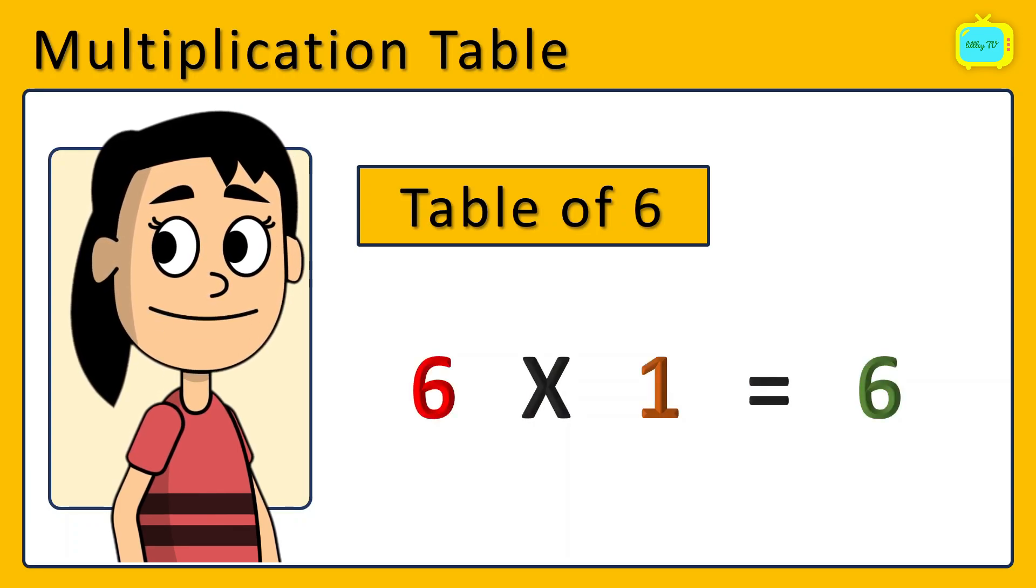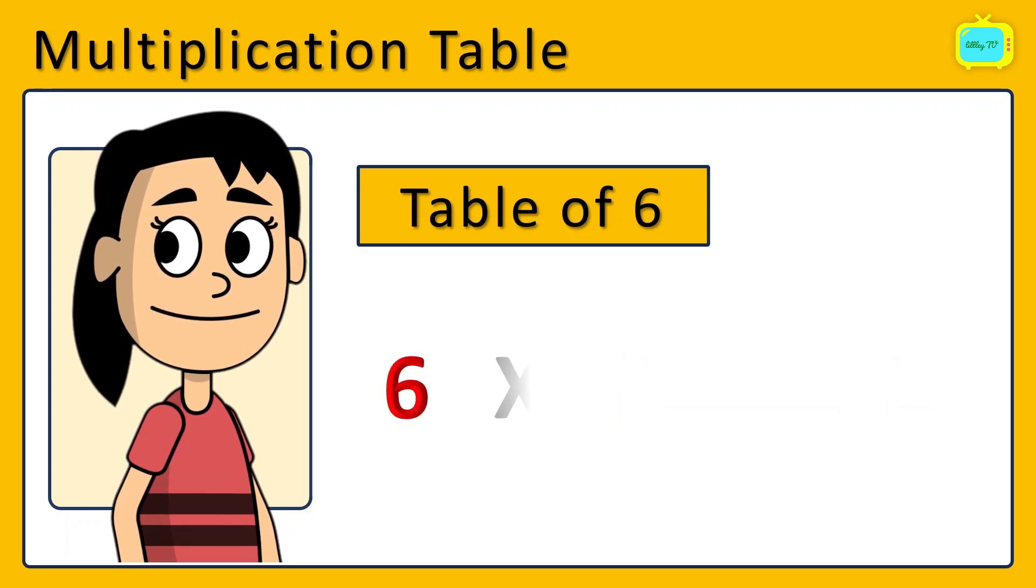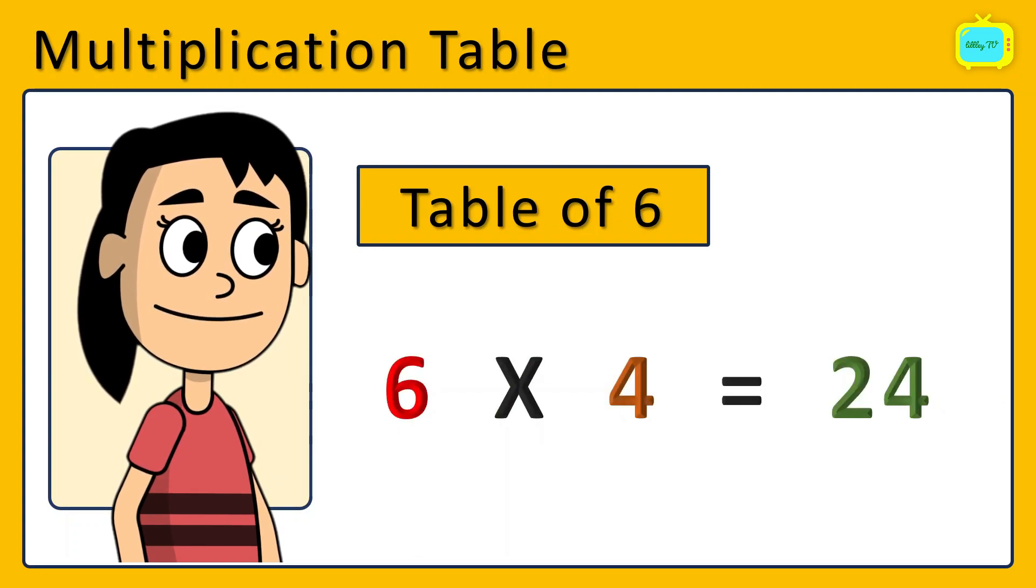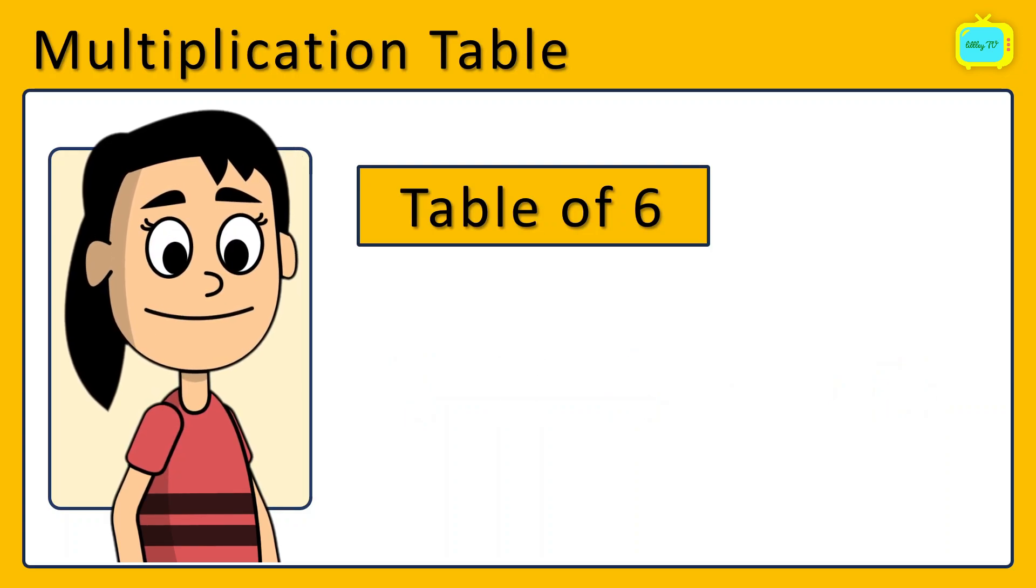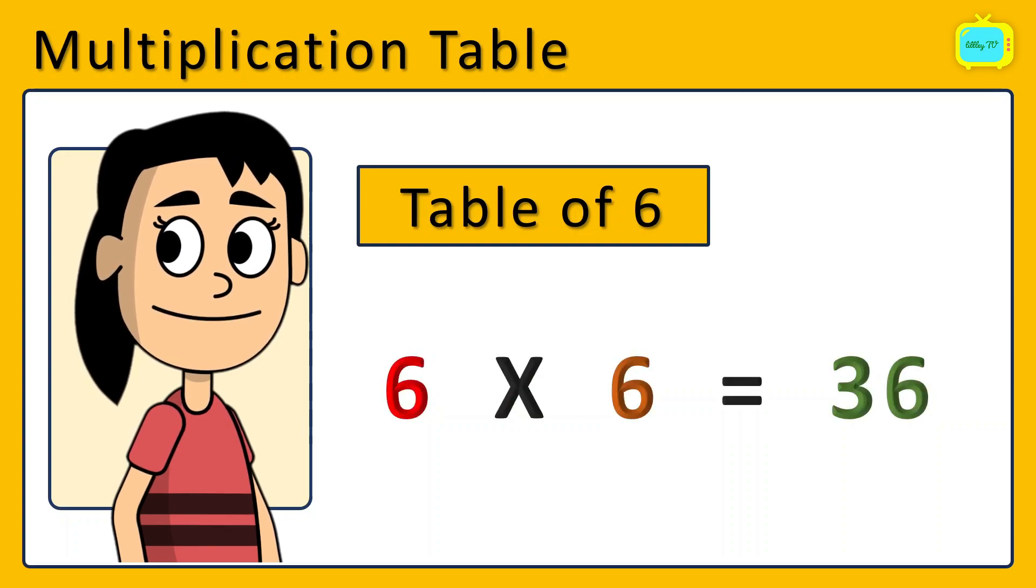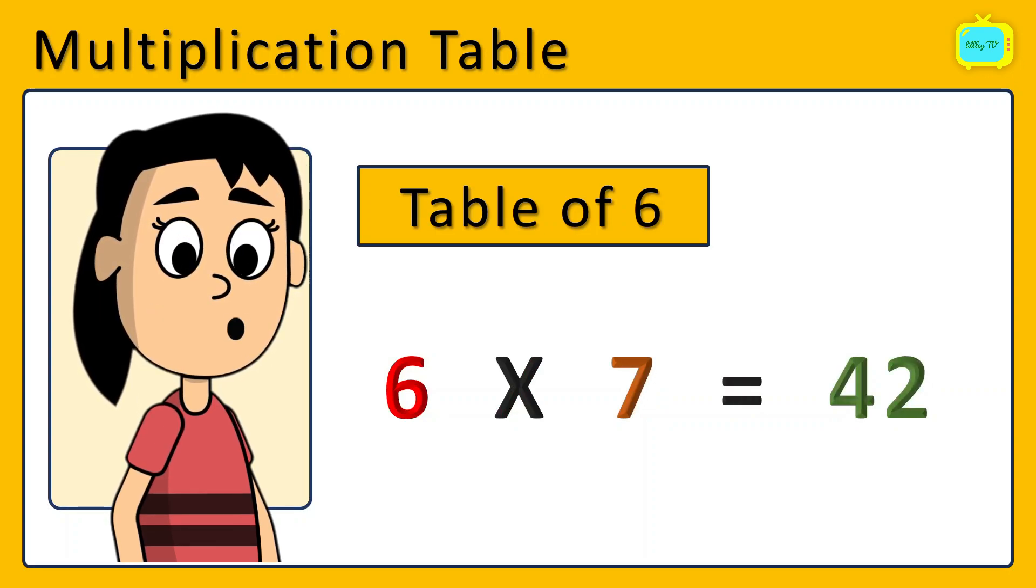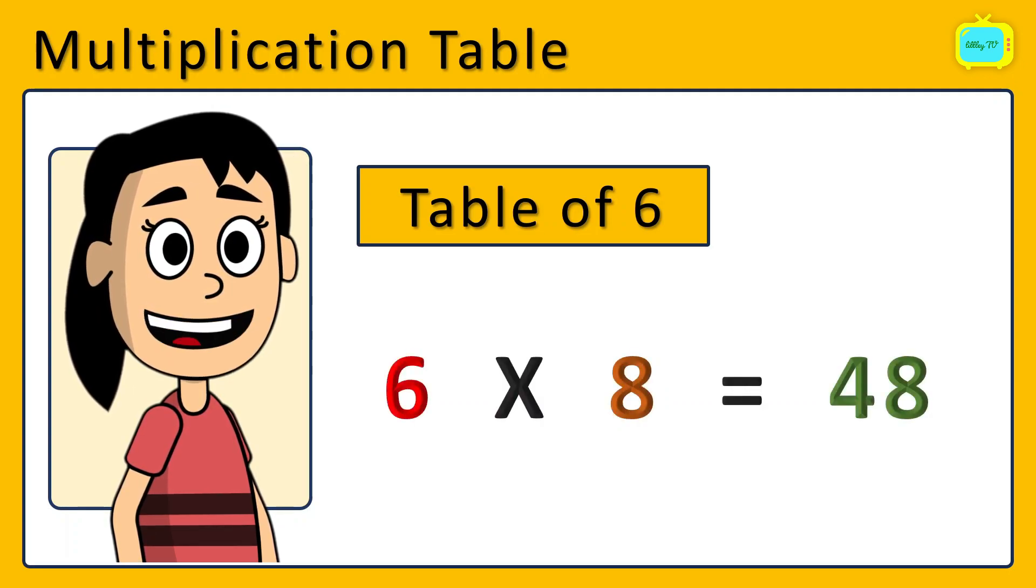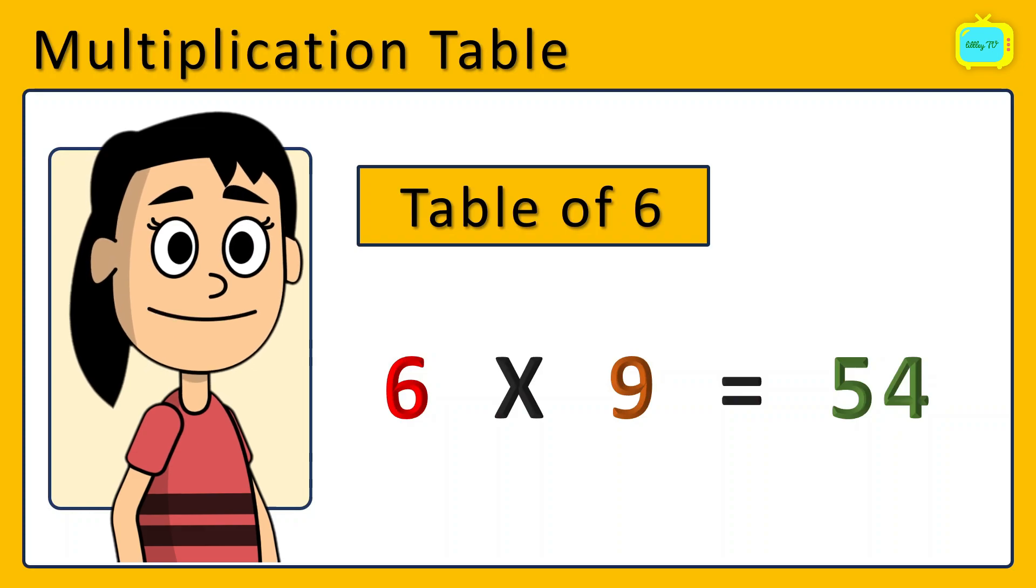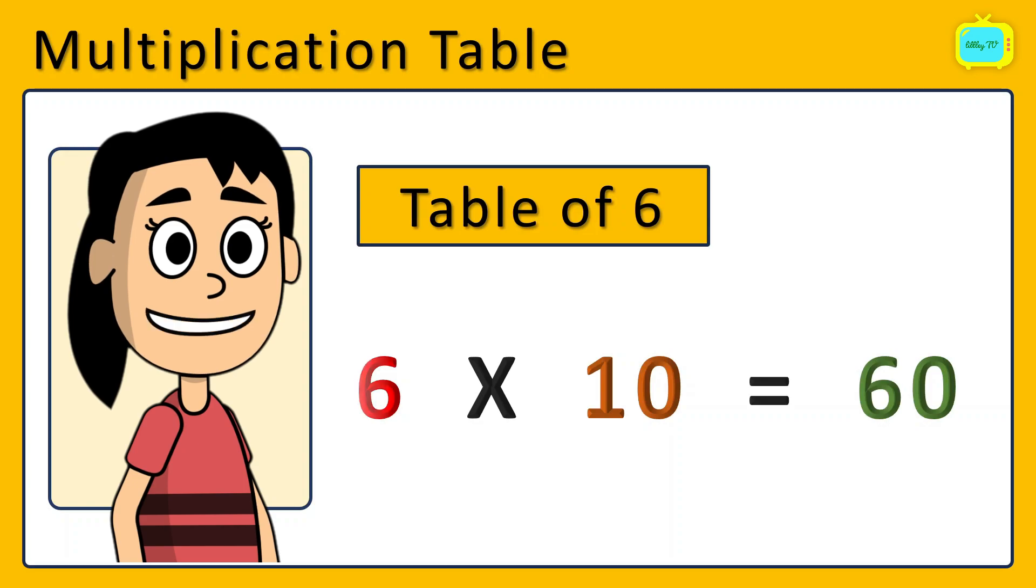6 1 is 6. 6 2's are 12. 6 3's are 18. 6 4's are 24. 6 5's are 30. 6 6's are 36. 6 7's are 42. 6 8's are 48. 6 9's are 54. 6 10's are 60.